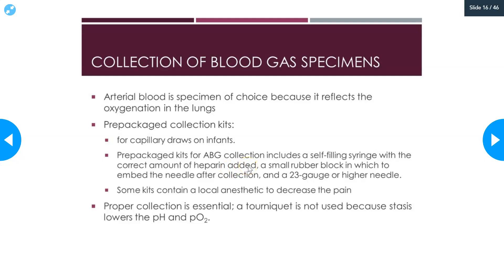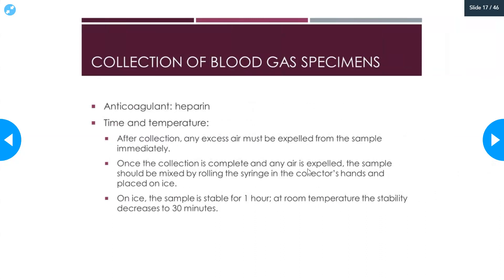There's usually a rubber cap to cover the syringe. The kit comes with a collection needle that has a safety device — once you've collected your blood gas, you activate the safety device, take the needle off, and put the rubber cap on. Some kits can contain a local anesthetic to decrease pain. Proper collection is essential. You do not use a tourniquet because it causes stasis of the blood and will lower the pH and the PO2. The anticoagulant of choice is heparin — make sure it stays in and gets properly mixed with your specimen so it doesn't clot.